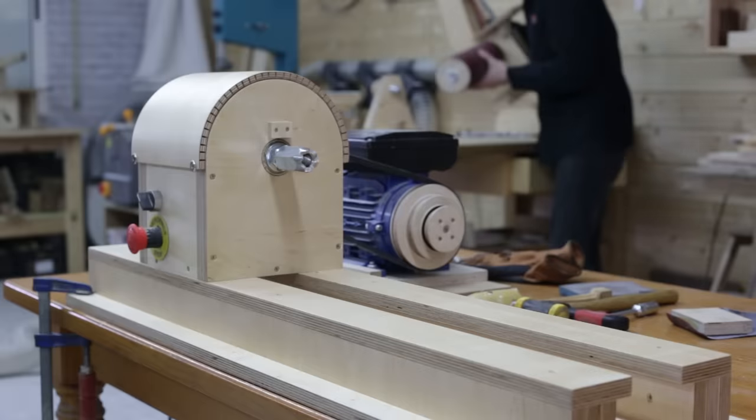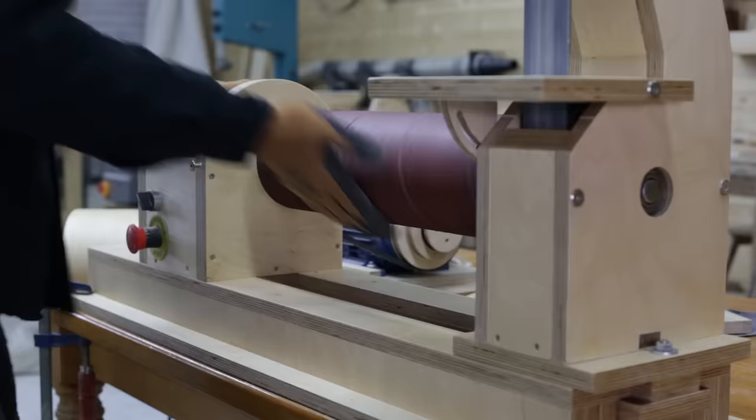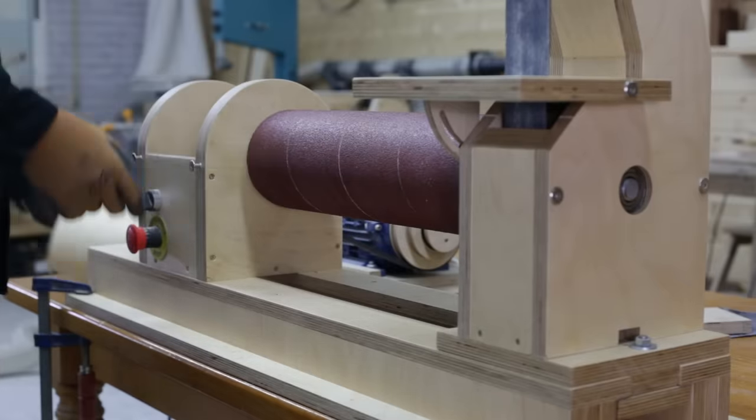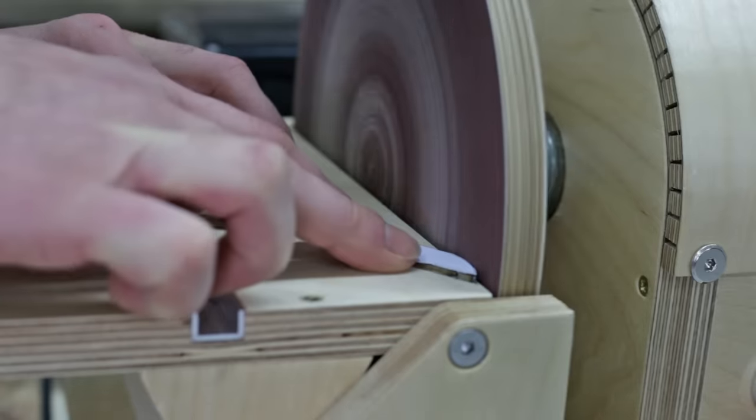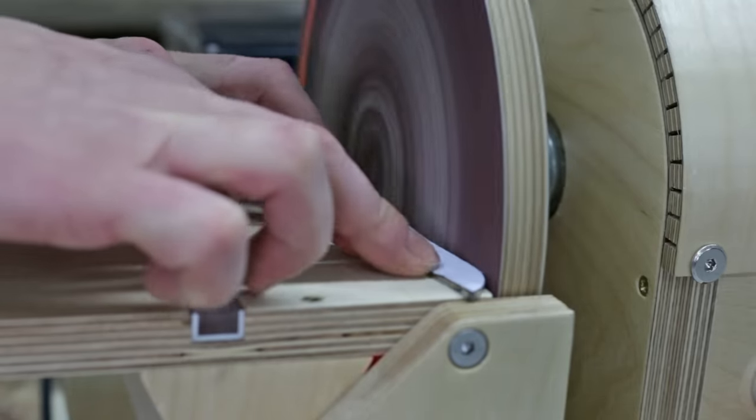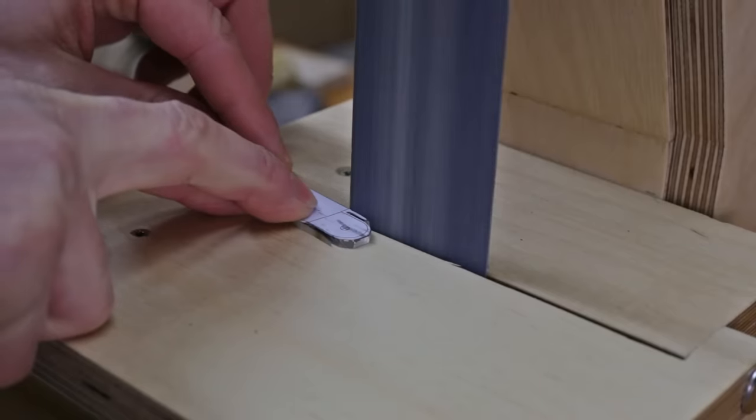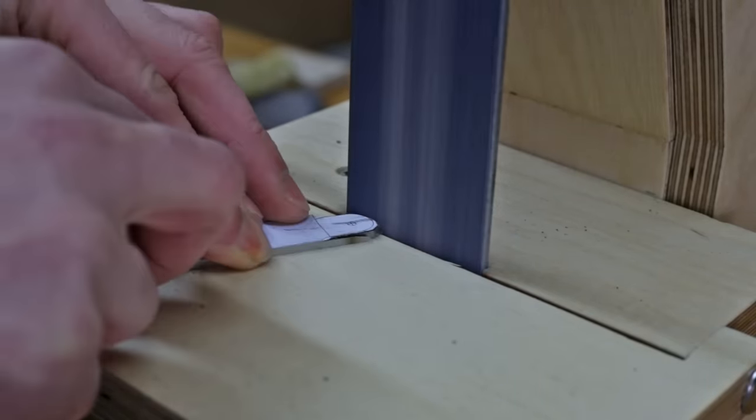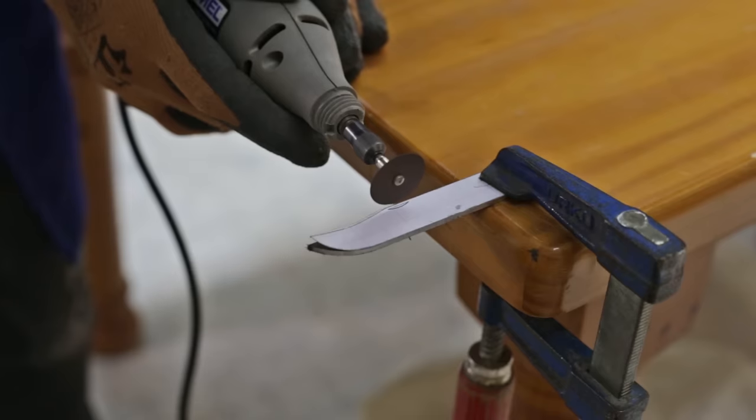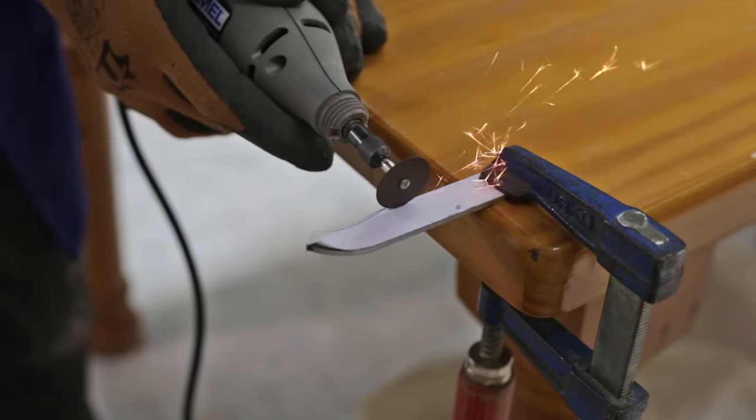I reattach the sanding station onto the lathe to finish shaping the blade. First with the disc sander, and then with the belt sander. Using a dremel, I make a notch allowing us to release the blade more easily.